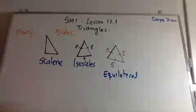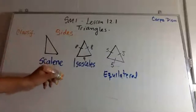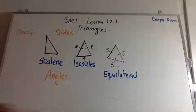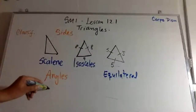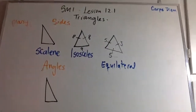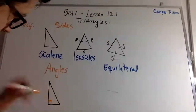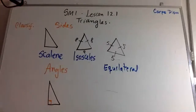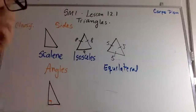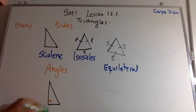We also classify triangles by the angles found in the triangle. This small square mark in the corner indicates a right angle. Triangles that have one right angle are called right triangles.